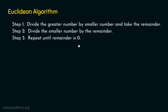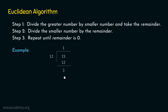Let's take a simple example. We want to find the HCF of 15 and 12. According to step one, we divide the greater number 15 by the smaller number 12. So, 15 is our dividend and 12 is the divisor. 12 once is 12, so we get a quotient of 1 and a remainder of 3. We are interested in the remainder.